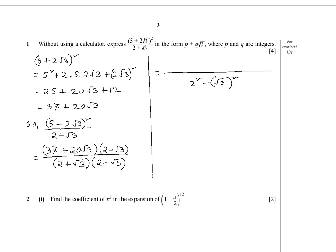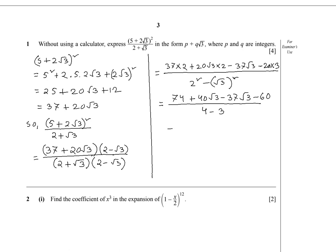The denominator becomes 4 - 3 = 1. In the numerator we expand: 37 × 2 + 20√3 × 2 - 37√3 - 20√3 × √3, giving us 74 + 40√3 - 37√3 - 60.